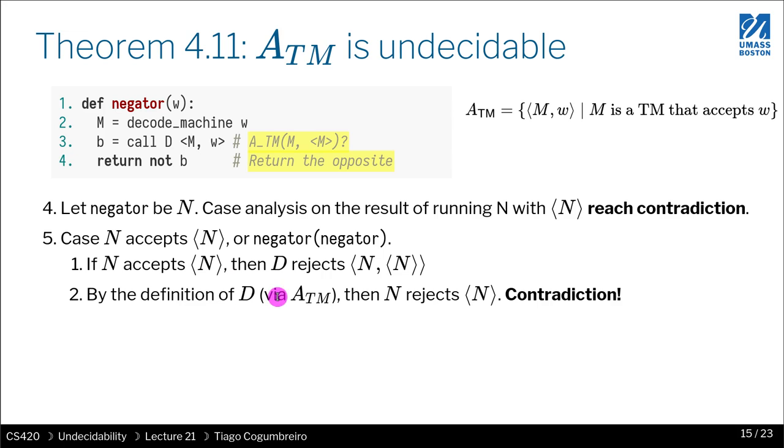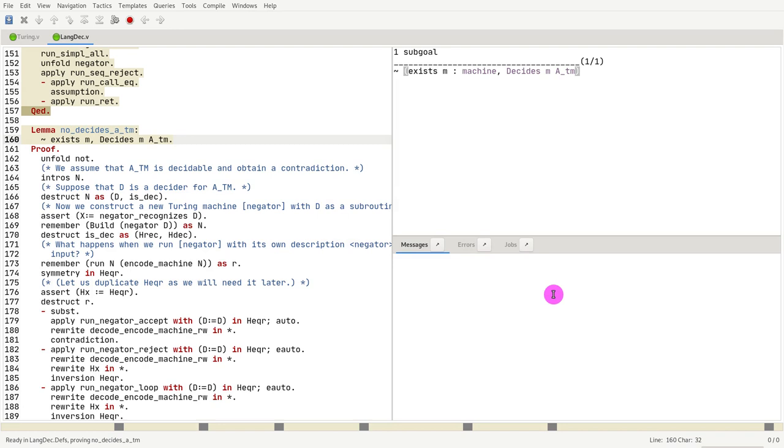So if b is false, that means that the decider is saying that m rejects w. But what is m? m is the code, is the machine. And what is w? w is the code. So which means that what we're saying is if the negator accepts the input, then that means that the negator rejects the input. And by definition of D, you get that N rejects the input, which means you get a contradiction. So let's try to see that happening here.